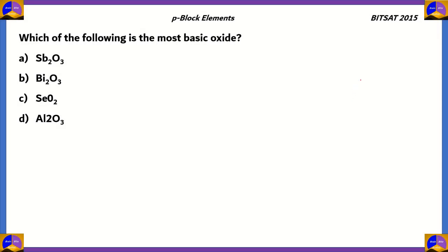Now, let's move on to the final question of this episode. This one's also asked from 2015. Which of the following is the most basic oxide? We have Sb2O3, Bi2O3, SeO2, and Al2O3. All of these are oxides, and all of these are oxides of the p-block. We have antimony, bismuth, selenium, and aluminum.